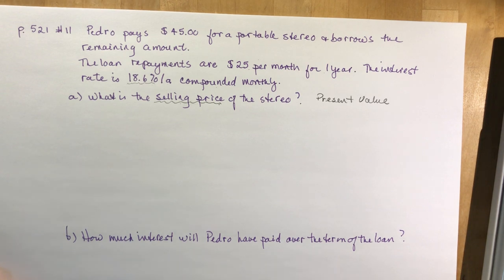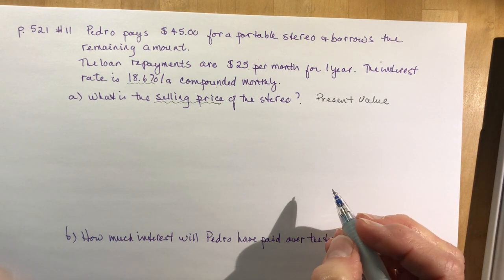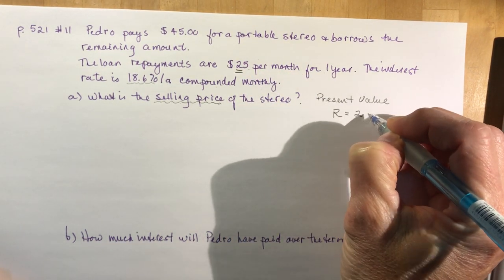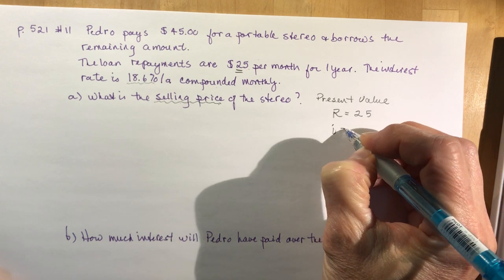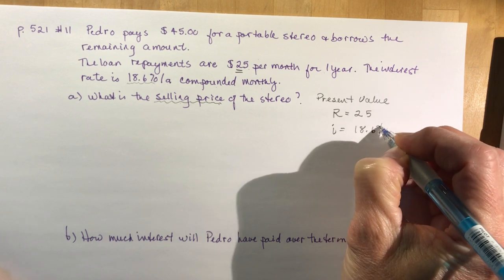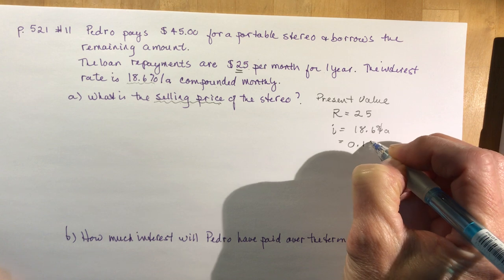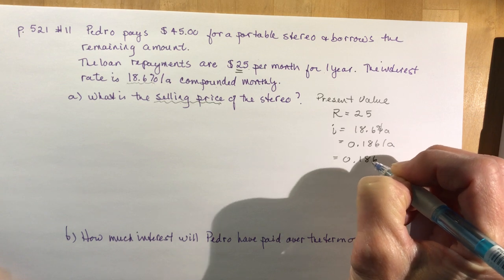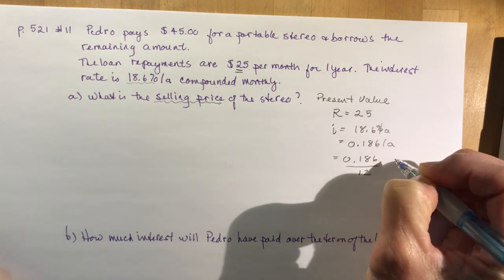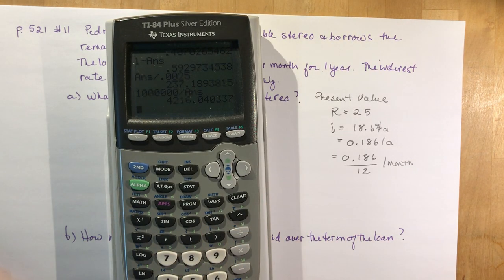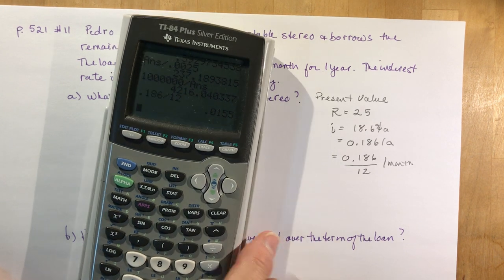For this question, the first thing you need to know is figure out what is R, what is my regular payment. Regular payment is $25 per month. The interest rate is 18.6% per annum, so that's 0.186 per annum or 0.186 divided by 12 per month.